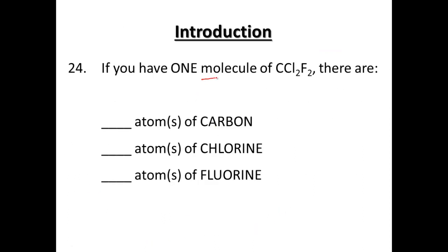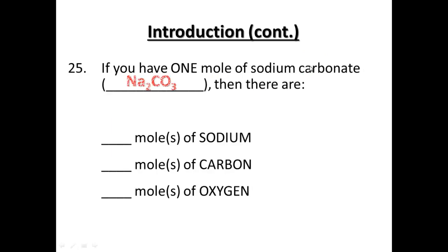Let's say you had one molecule of a chlorofluorocarbon. Chlorofluorocarbon is bad for the environment and the ozone. That chemical formula is CCl2F2. If you have one molecule of it, that would mean you would have one carbon atom, two chlorine atoms, and two fluorine atoms. Remember we don't write ones, but there would be a one there.